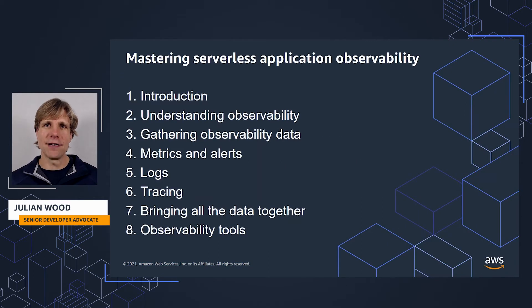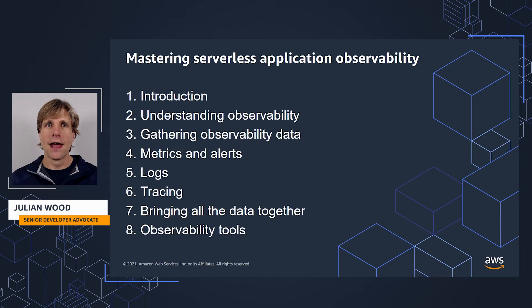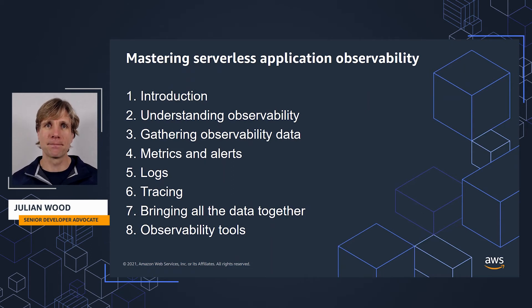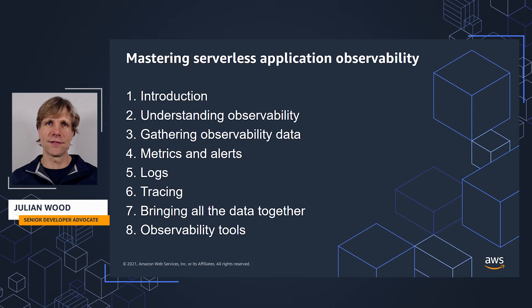In the series, I go through adding observability to a demo serverless application, which you can try yourself. After this introduction, I'm going to spend a good amount of time going through what observability is, to help you understand the benefits and how it differs from monitoring, and explore the data that can help give you those insights. Then I go through how to gather and use metrics, alerts, logs, and traces with the demo application using AWS services.